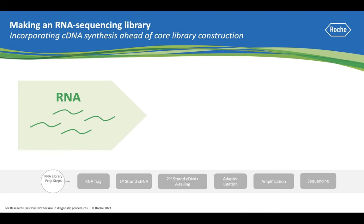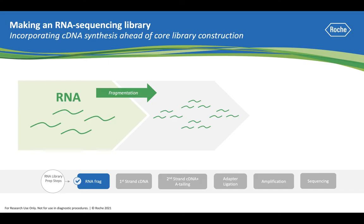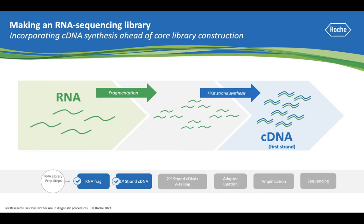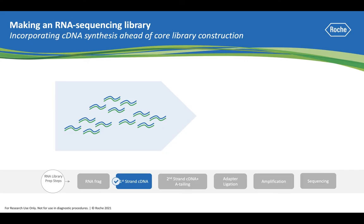Making an RNA sequencing library involves multiple steps. First, prior to the cDNA synthesis, the isolated RNA is typically fragmented to produce fragment sizes that are compatible with short read sequencers. The fragmented RNA is then converted to cDNA, making the cDNA fragments compatible with the next step, adapter ligation.